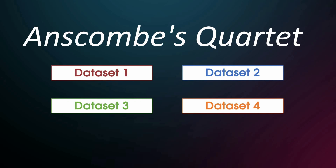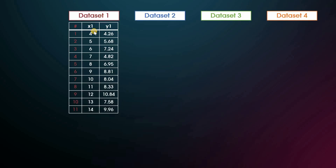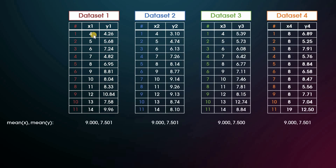The Anscombe's Quartet was created by Francis John Anscombe in 1973 and consists of four datasets. Each of these datasets have 11 pairs of x and y values. When you look at their average x values and their average y values, which you could do with the mean x or mean y function, you will notice that for x they are identical and for y they are identical for the first two decimal places and then only differ slightly on the third decimal place.